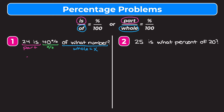Now we need to plug these different values into our proportion. So 24 is our part, so it goes on the top left. Our 'of' is what we're solving for, so it's going to be x on the bottom left. Our percent is 40, so we're going to have 40 over 100. Now we just need to solve this for x. I like to simplify my fractions first, so I'll simplify the right side. I'll cross out both zeros, which is dividing top and bottom by 10, then divide 4 and 10 by 2 to get 2 fifths. On the left, it stays as 24 over x.